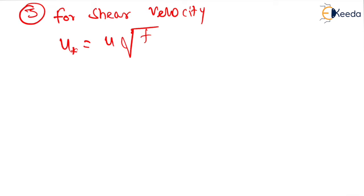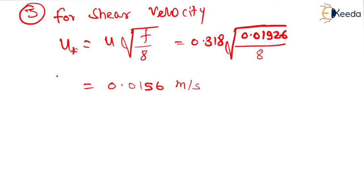Thirdly, we will calculate the next term that is shear velocity. For shear velocity, this u* is equal to u under root f upon 8. This is the only formula that we can use. 0.318 under root f is 0.01926 upon 8. That is equal to 0.0156 meters per second.